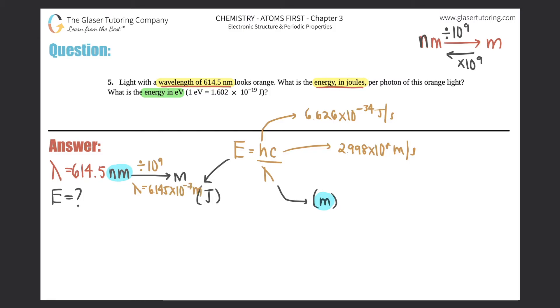And now I'm ready to plug everything in. So let's go for it. E equals h, which is 6.626 times 10 to the negative 34th, times 2.998 times 10 to the eighth, all over the new number that we had to find out, which was 6.145 times 10 to the negative 7th meters. And my E is 6.626 times 10 to the negative 34th times 2.998 times 10 to the eighth all over 6.145 times 10 to the negative 7th.